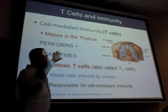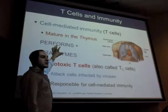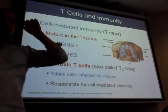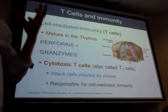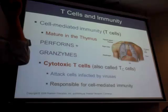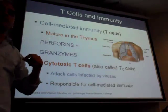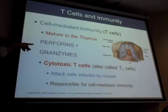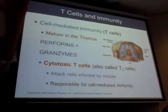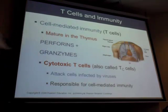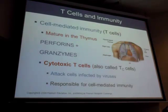Cytotoxic T cells attack cells that have viruses in them. Go to the immune system app, cellular immunity, video number 11 — cytotoxic T cell. Activated CD8 cells become effector cells called cytotoxic T cells. Like foot soldiers patrolling for enemies, cytotoxic T cells search the body for cells displaying the MHC-antigen pair they recognize. When found, they kill the cell by triggering apoptosis.